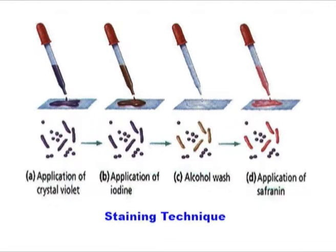In order to obtain a clear finely detailed image under a compound light microscope, the specimen must be made to contrast sharply with their medium. This contrast can be achieved by changing the refractive index of specimens from that of their medium. Refractive index is a measure of the light bending ability of a medium. The refractive index of the specimen can be changed by staining them.